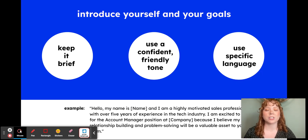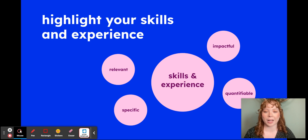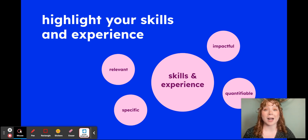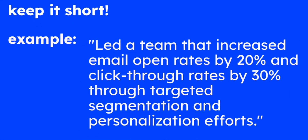Once you've made a strong introduction, you want to move into talking about your specific skill set, and you're going to want to make sure that the words you're using are relevant to the job that you're applying to. Be as specific as you can, make sure that these are impactful skills and experiences. And when possible, make sure they are quantifiable. A great example of this is: 'I led a team that increased email open rates by 20% and click-through rates by 30% through targeted segmentation and personalized efforts.'